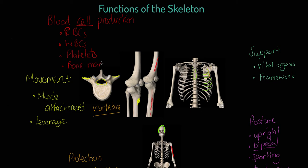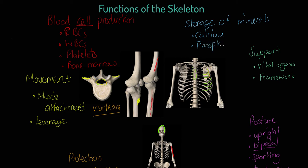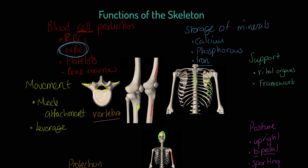Finally, the skeleton is the location for the storage of minerals. It can store calcium, used for strengthening structures like bones; phosphorus, important for healthy muscle function; and iron, important for the development of red blood cells, which contain haemoglobin — an iron-based protein. To summarise, the six functions of the skeleton are: support, posture, protection, movement, blood cell production, and the storage of minerals.